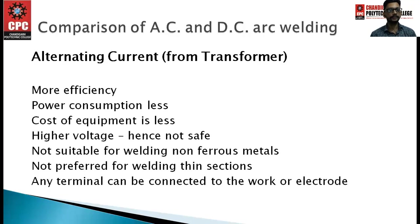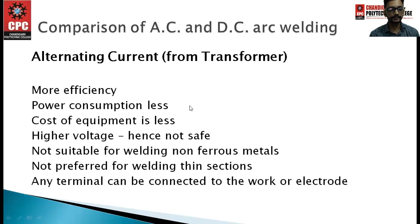In the comparison between AC and DC arc welding: AC (alternating current from transformer) has higher efficiency, less power consumption, lower equipment cost, but higher voltage hence not safe, not suitable for welding non-ferrous metals, not preferred for welding thin sheet sections, and any terminal can be connected to the work or electrode.